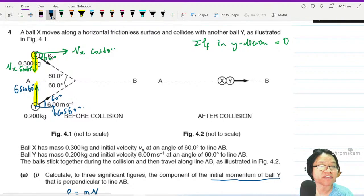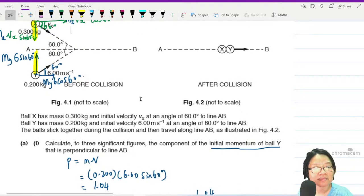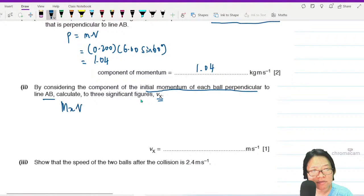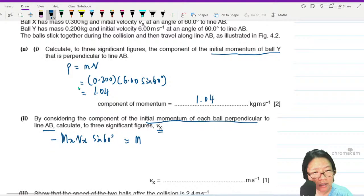I'm resolving velocity. Multiply by M. Mx times Vx and this is My times Vy. These two momentum will cancel out each other. So I will write MxVx sine 60 is equal to My 6 sine 60. This one going down is equal to this one going up.